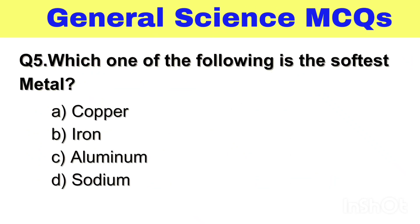Question No. 5. Which one of the following is the softest metal? Option A. Copper, B. Iron, C. Aluminium, D. Sodium. The right answer, Option D. Sodium.